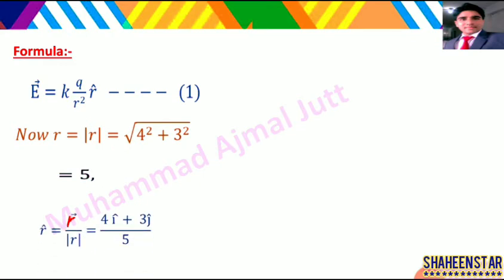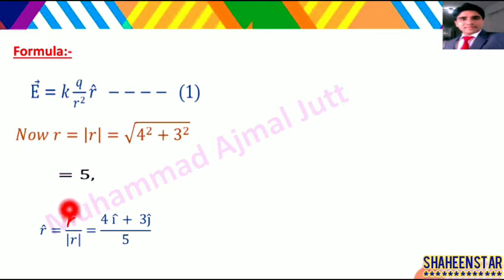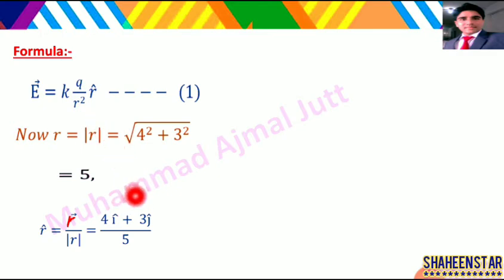Unit vector ki definition: r̂ is the ratio of vector to its magnitude. R̂ = r (vector) / |r| (magnitude). Values substitute karte hain: r̂ = (4i + 3j) / 5. Ab is value ko hum formula mein r̂ ki jagah put karenge.